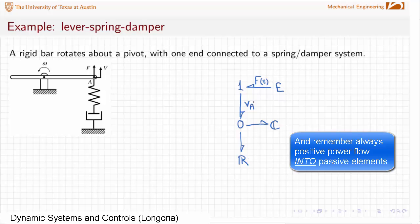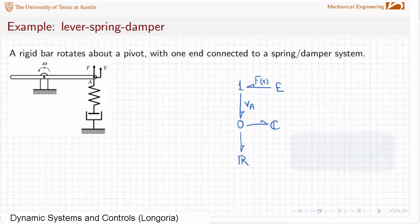And now, what do I do about connecting this element? Let's assume that this element has some inertia about this point here. So what I'm going to do is, I need a transformer for that lever, that goes from this velocity to omega. So this is omega here, and this is the velocity at point A, and it's common.